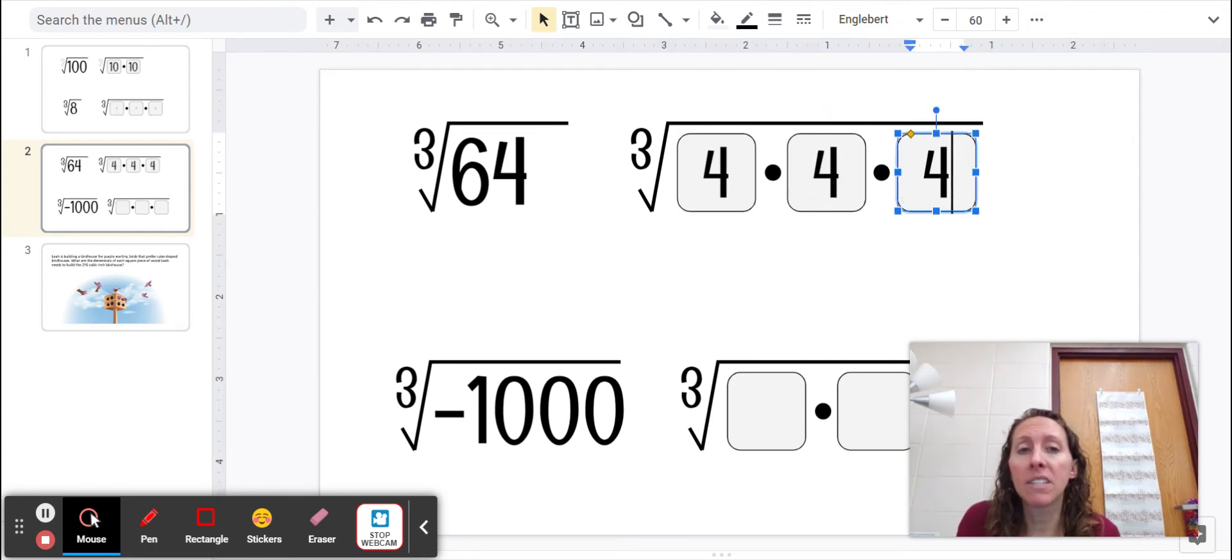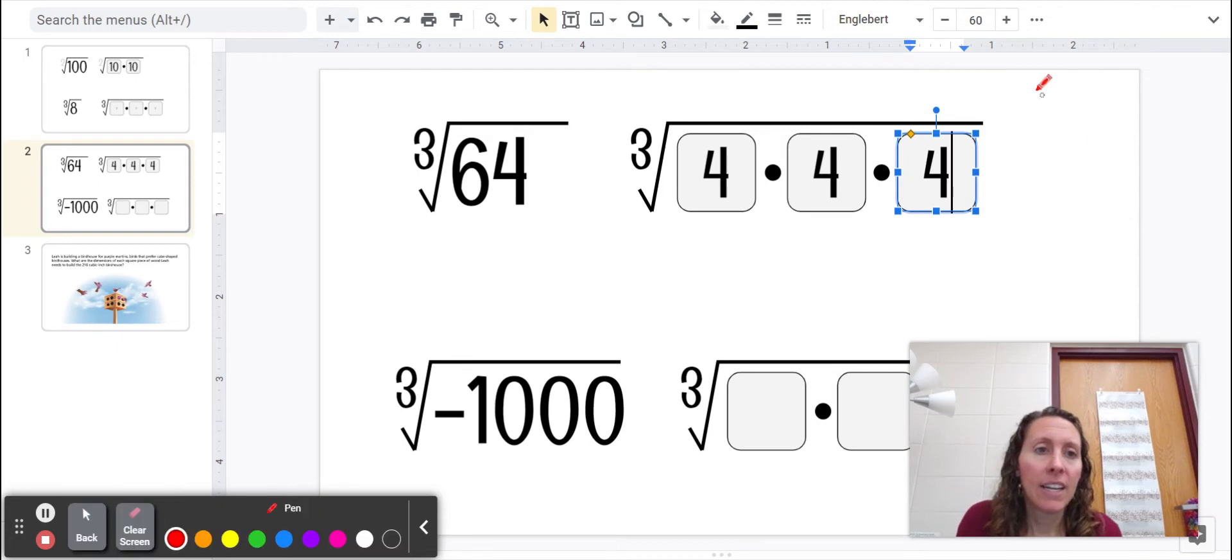4 times 4 is 16, and 16 times 4, yep, that would be 64. Perfect. So the answer to this one would be 4.